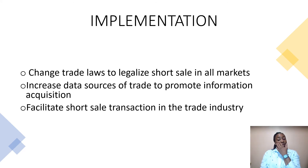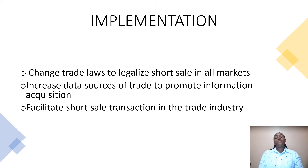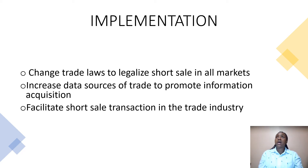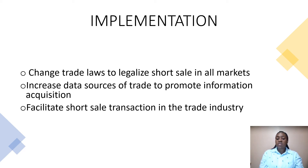To implement those solutions, some changes need to be done. First and foremost, we need to change trade laws to legalize short-selling in all markets. Short-selling is legal in the United States, but not all stocks are available to short-sell — there are some stocks that have restrictions, so it would be really important to remove those restrictions. Then we need to increase data sources of trade to promote information acquisition, and we need to facilitate short-sell transactions in the industry.